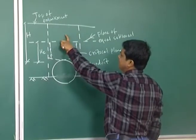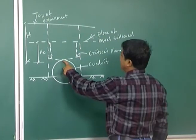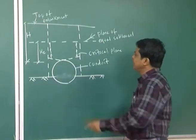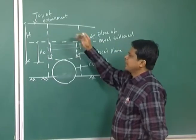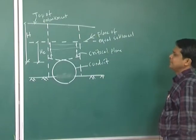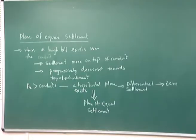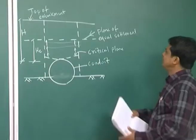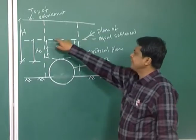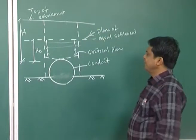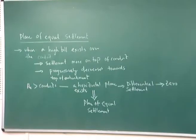When there is a high fill, the settlement above the top of the conduit will be very high and will slowly decrease. At a certain point, a horizontal plane exists at which the differential settlement is zero — this plane is called the plane of equal settlement. That means the settlement everywhere at and above the top of the conduit will be equal.